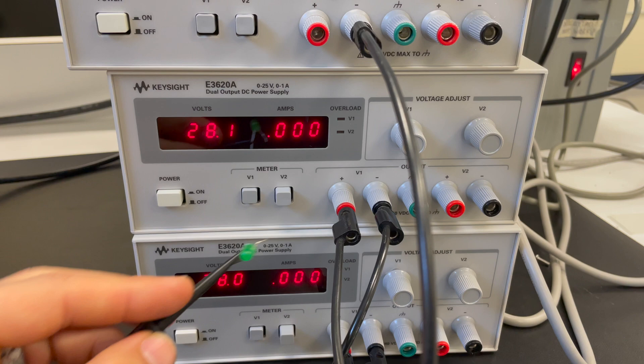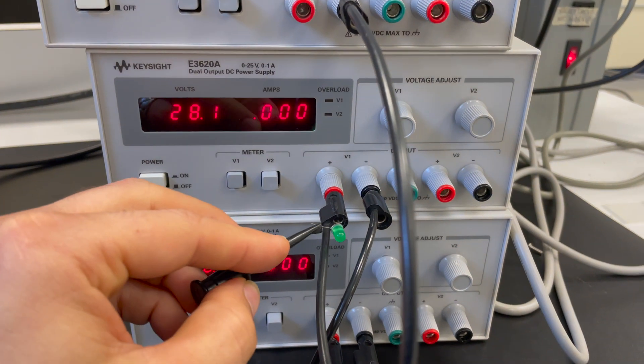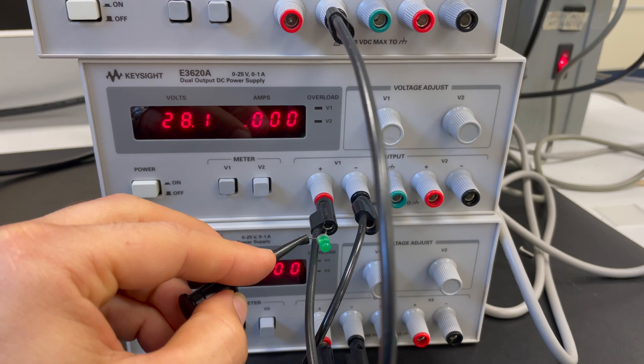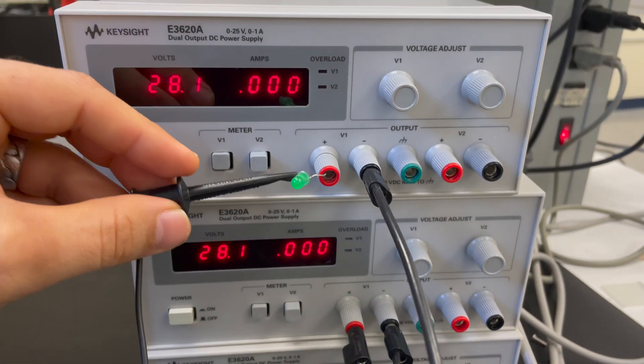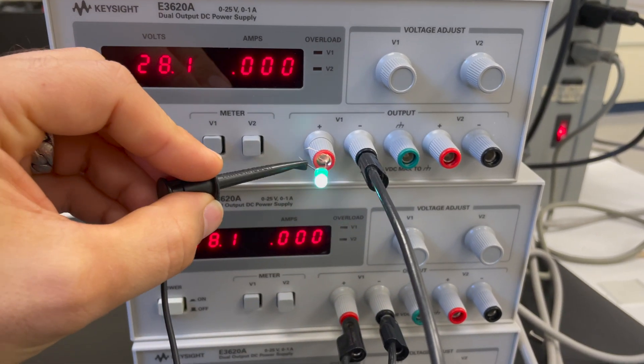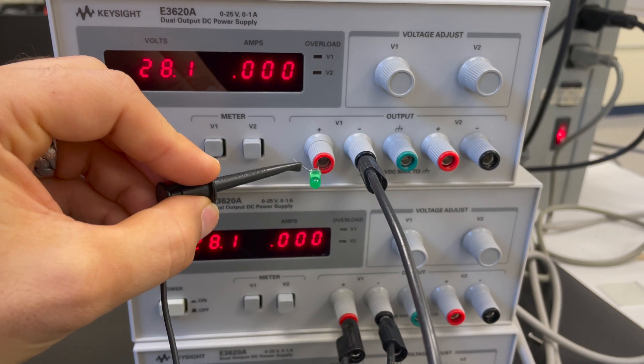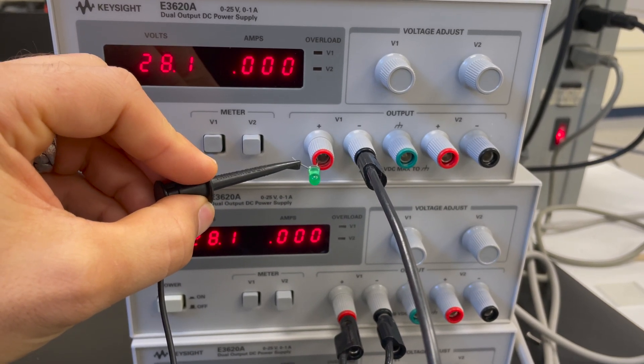Okay so this time applying about 56 voltage to the diode and nothing seems to happen. Okay so when I applied 84 volts to the diode I was able to get current to flow in the reverse bias position and this destroyed the diode.